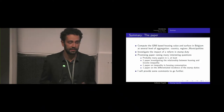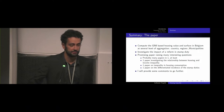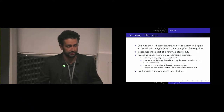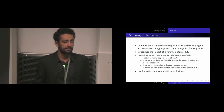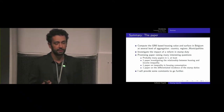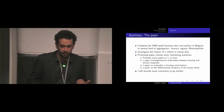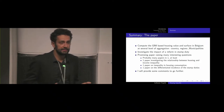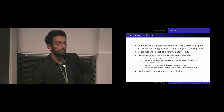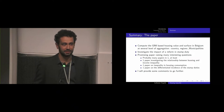They compute the Gini based on housing value and surface for Belgium. Results were mostly presented for housing value at several levels of aggregation: country, region, municipality, and even dwellings. And second, after providing some description and feeling about how inequalities in the housing stock might reflect the real inequalities between households, they investigate the impact of a reform of what we could call the transfer tax or stamp duty in housing economist language.